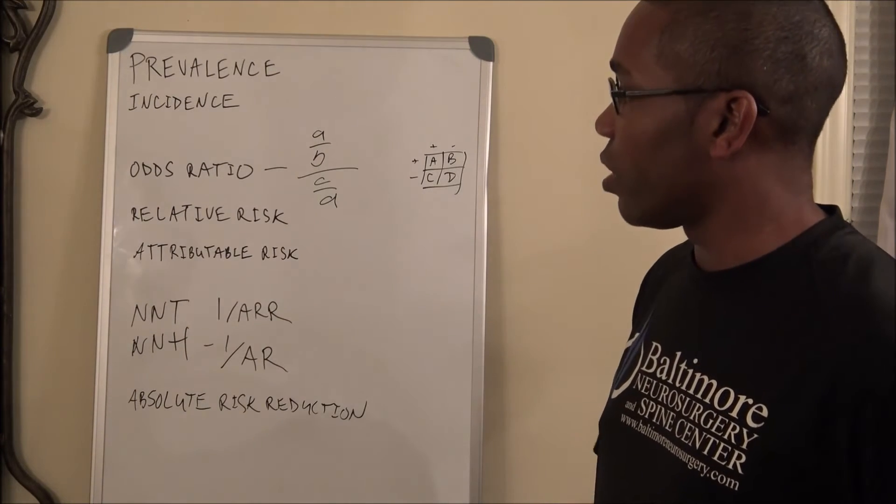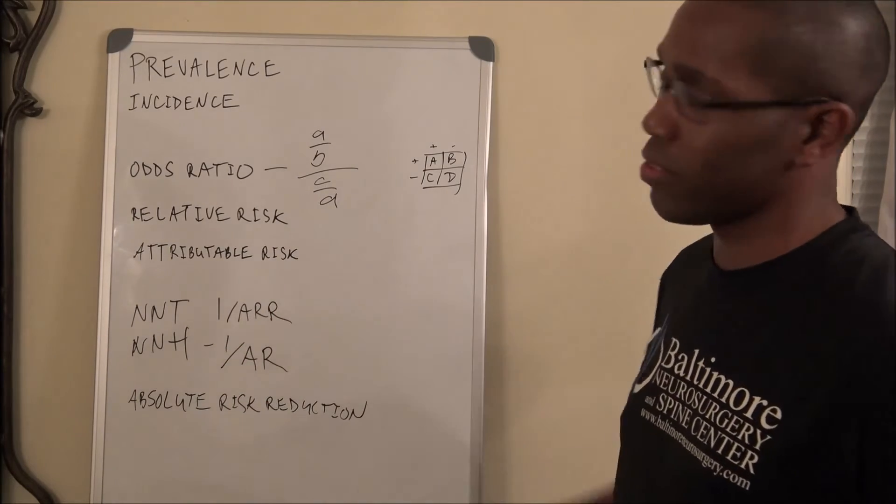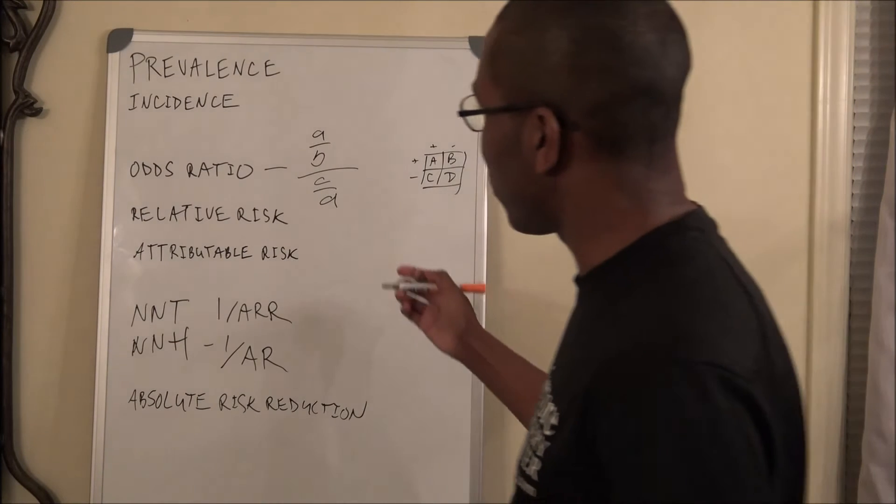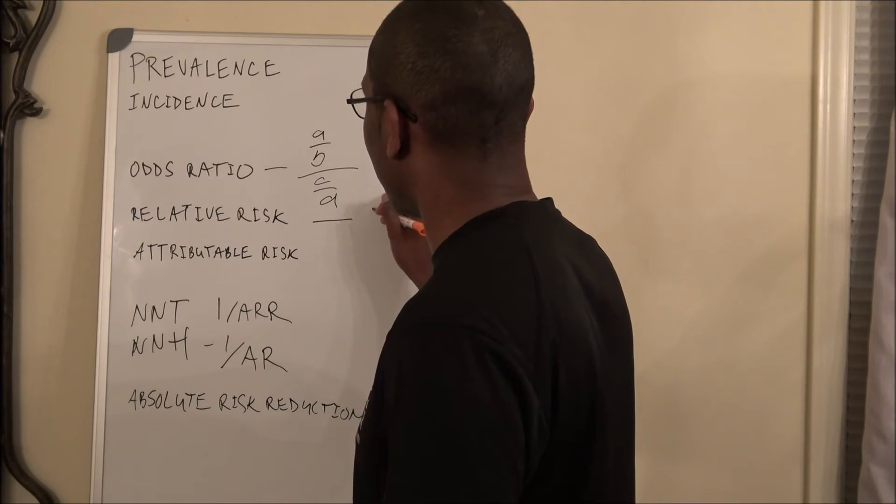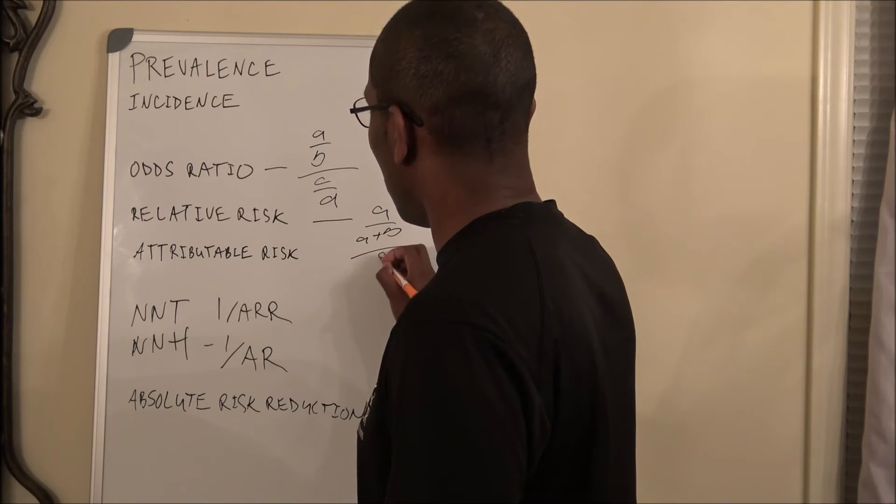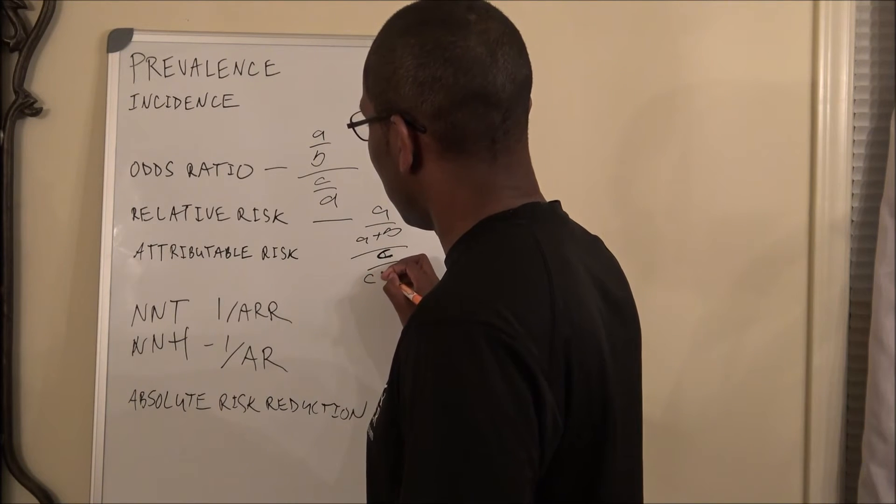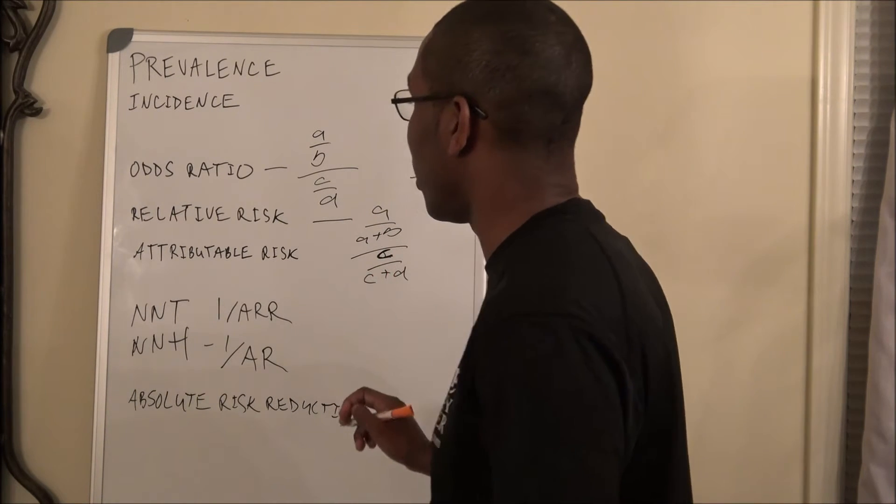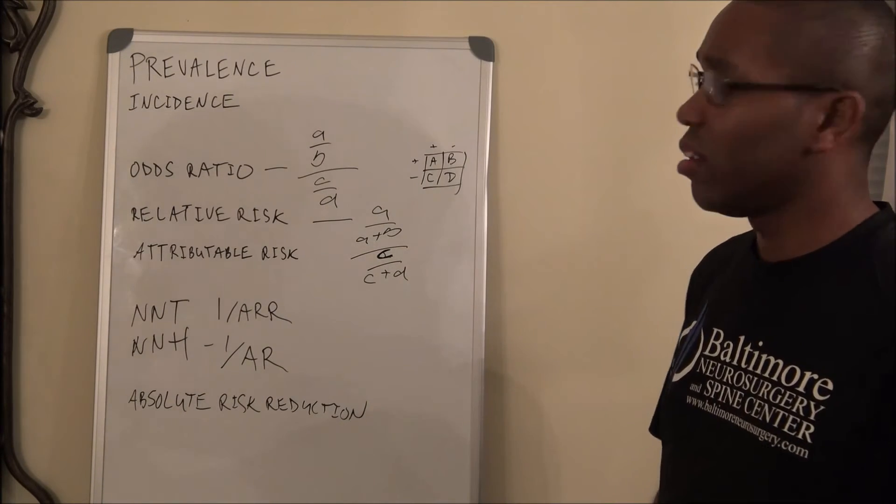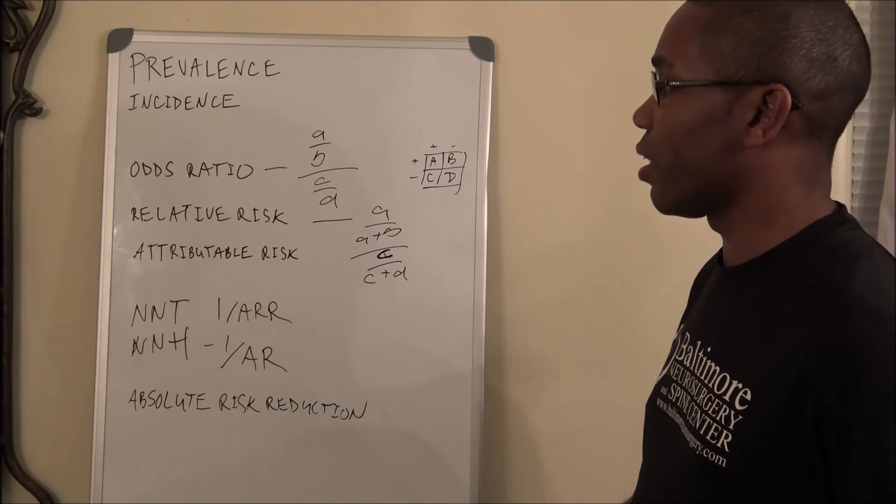So whenever you have relative risk, you need to think of cohort studies. And that's not going to have the two numbers like odds ratio, but you're going to have three numbers. So basically what you're going to have is A over A plus B over C over C plus D. So you've got A over A plus B divided by C over C plus D. You're going to have three numbers for relative risk.